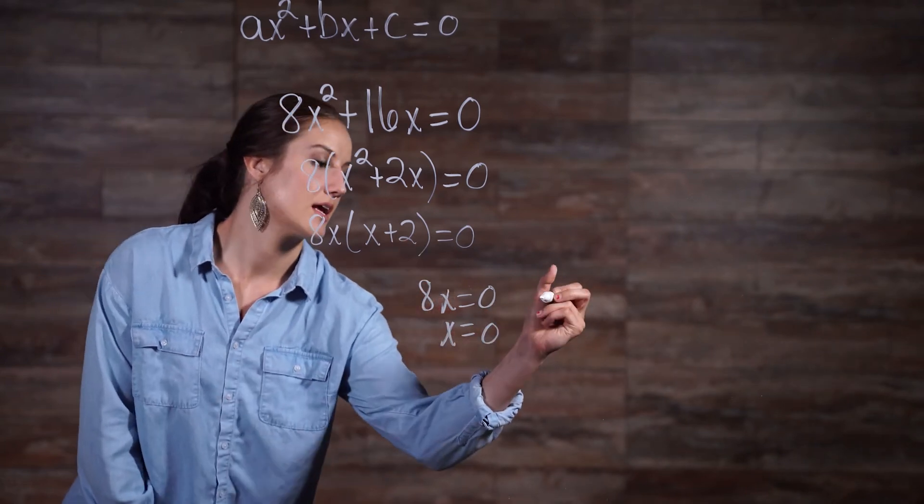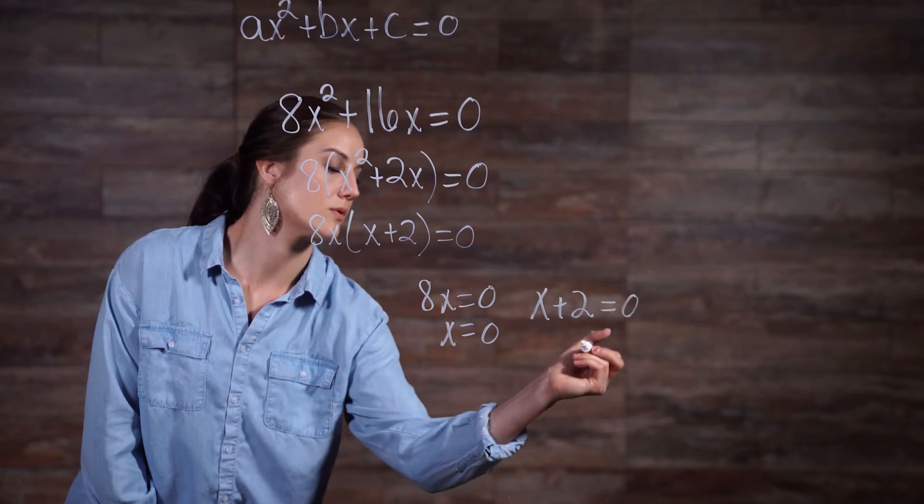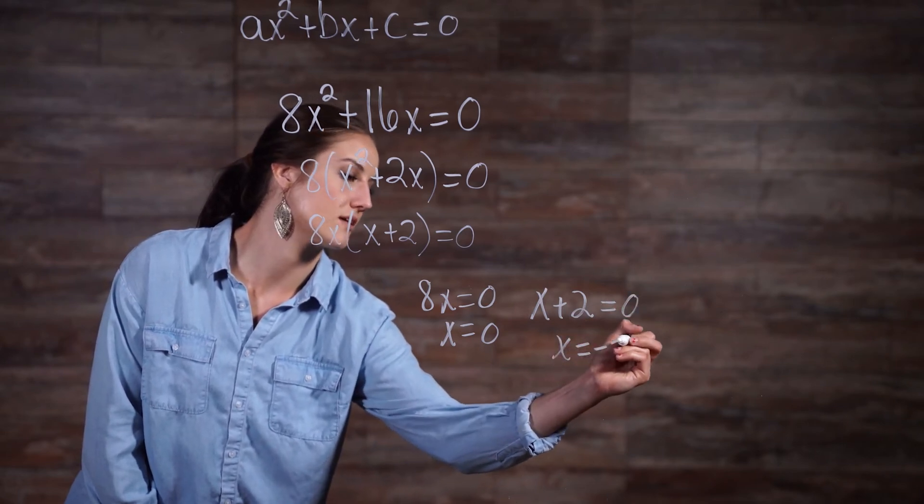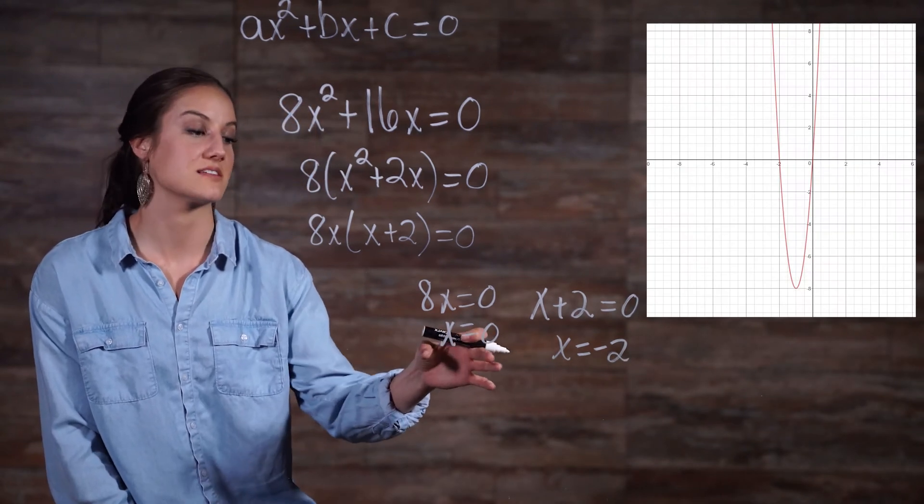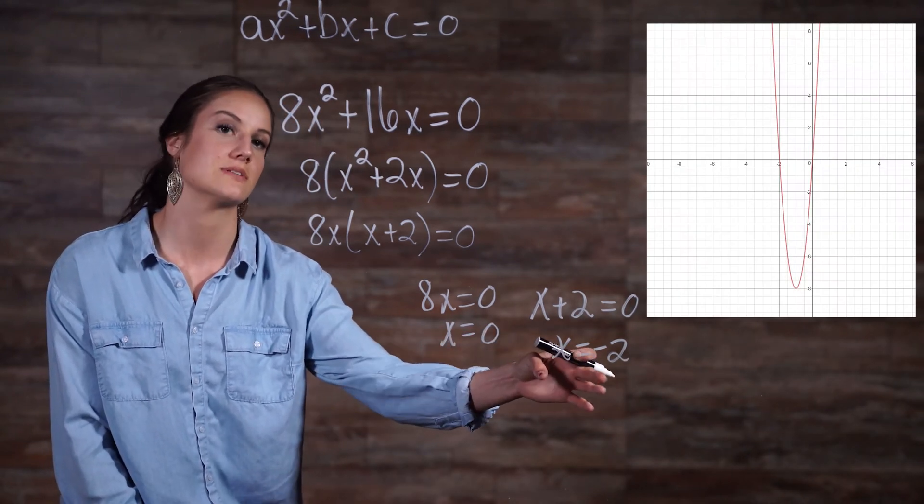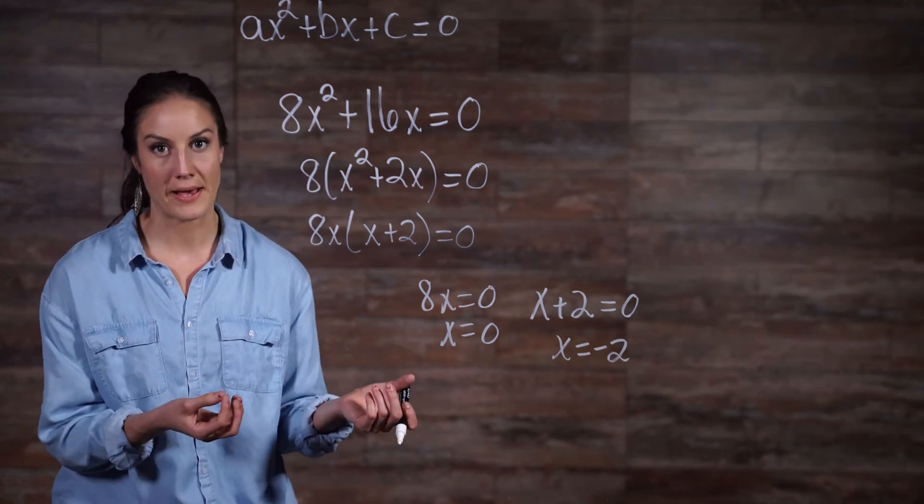And then we have our other factor, x plus 2 equals 0. And when we solve, we have x equals negative 2. So our graph is going to be equal to 0 when x equals 0 and when x equals negative 2. Alright, so that was kind of a side note to answer the question, why does factoring matter?